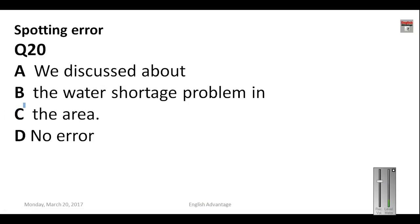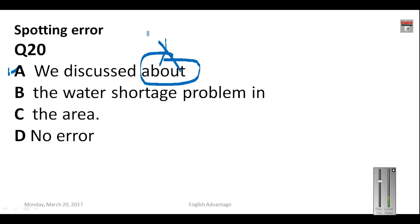Question number twenty: 'We discussed about the water shortage problem in the area.' After words like 'discuss' and 'order,' we do not use a preposition. So the word 'about' should not come here. The correct sentence is: 'We discussed the water shortage problem in the area.' Your answer will be A.